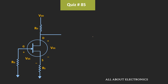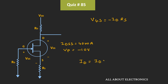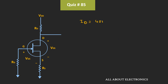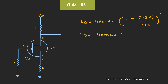For the self-biased configuration, Vgs is equal to minus Id times Rs. Here, Idss is equal to 40mA and Vp is equal to -10V. Assuming the JFET is operating in the saturation region, the drain current Id can be given as Idss times (1 - Vgs/Vp) squared. So the drain current Id is equal to 40mA times (1 - (-5V)/(-10V)) squared, which equals 10mA.